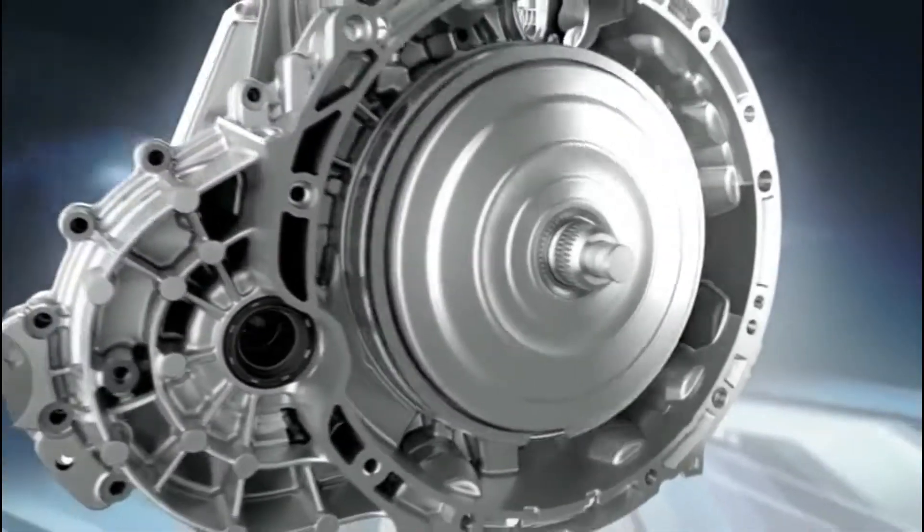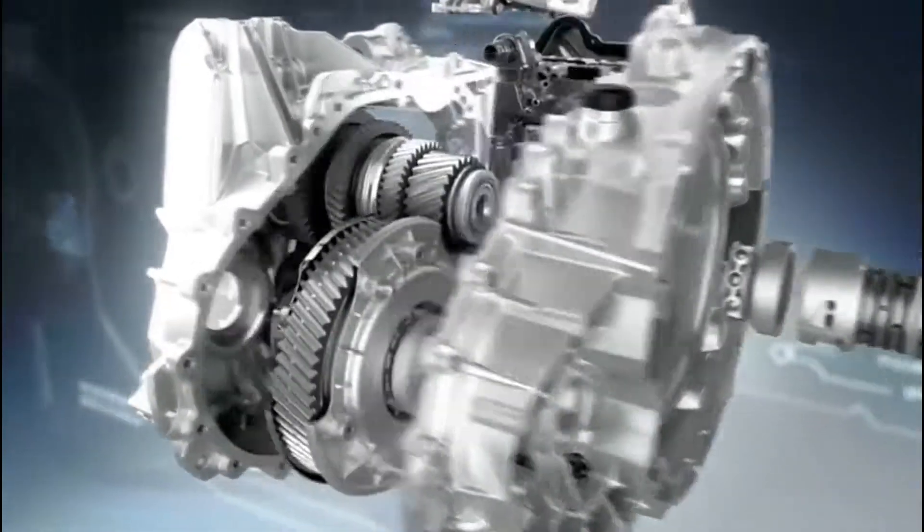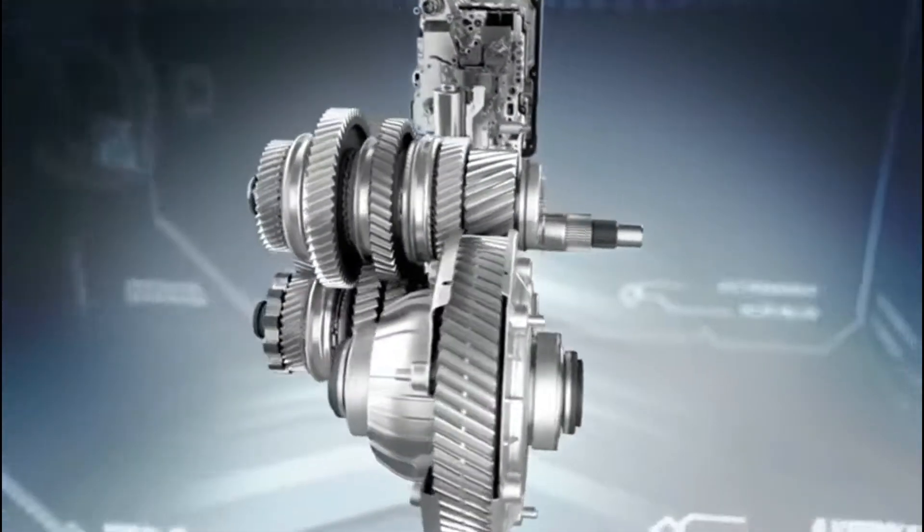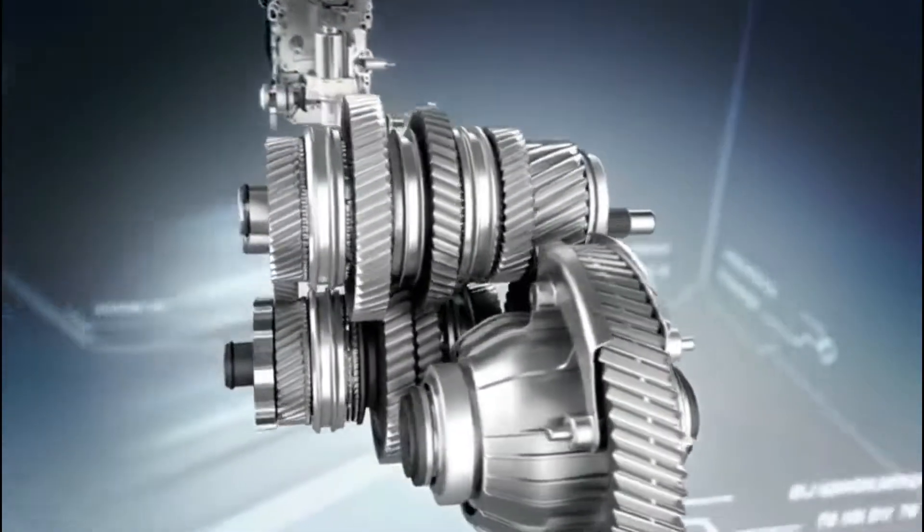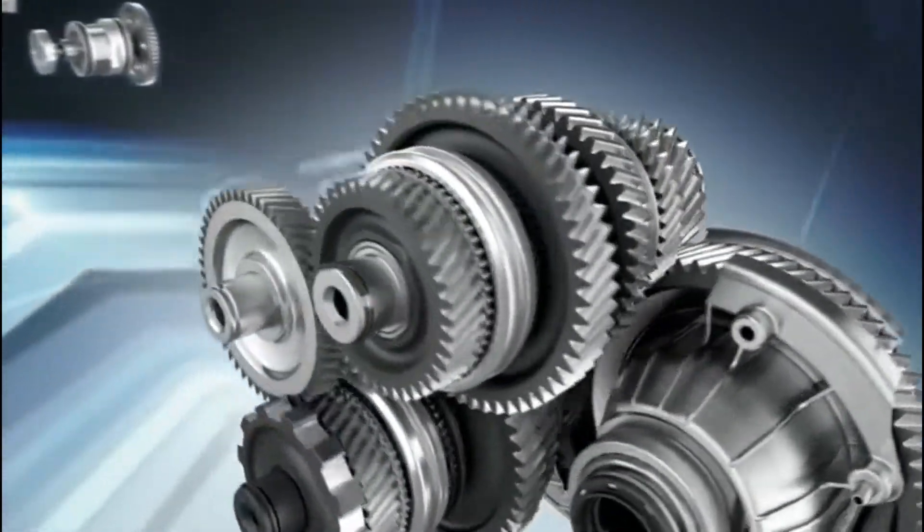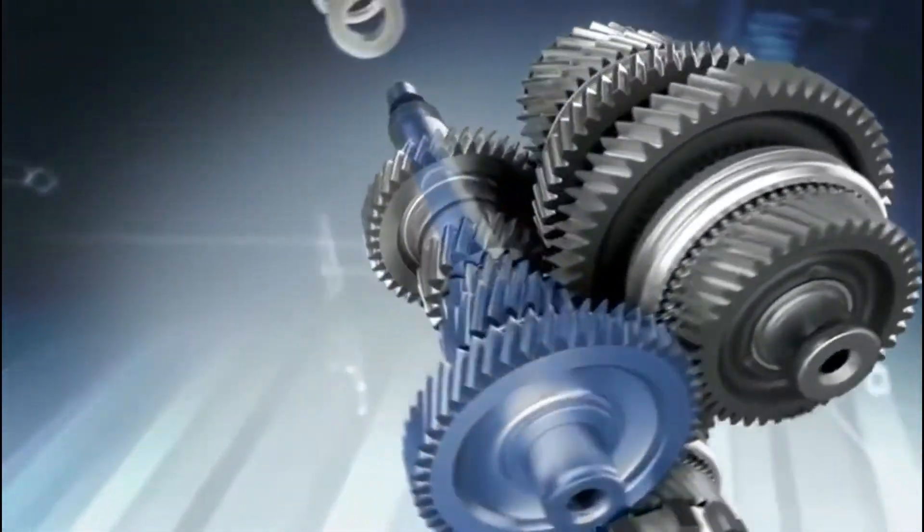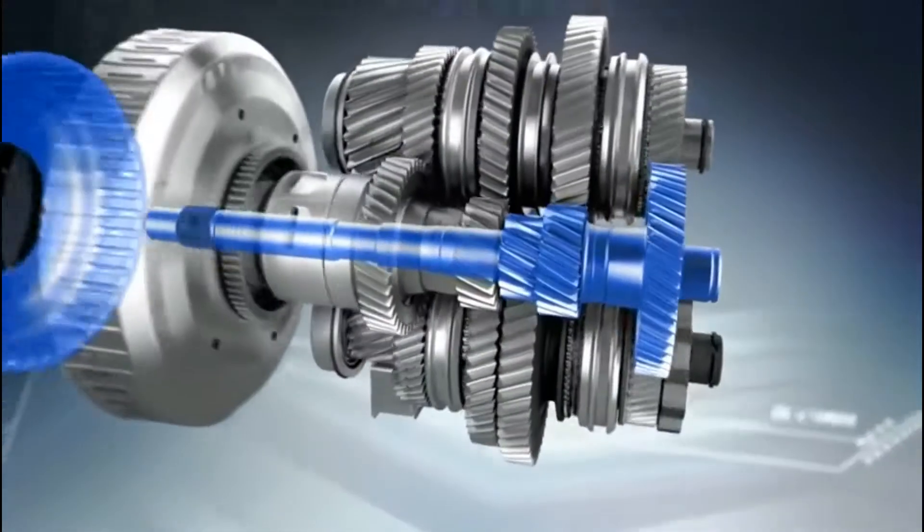The innovative clutch and gear set concept is among the major innovations of the 7G DCT. Both part transmissions are permanently engaged, although only one is connected to the engine via the corresponding clutch at any one time.